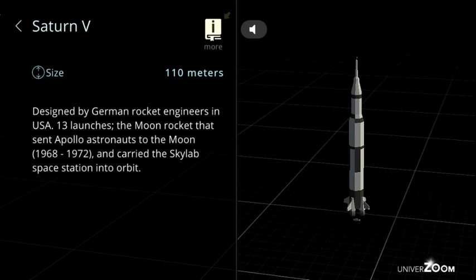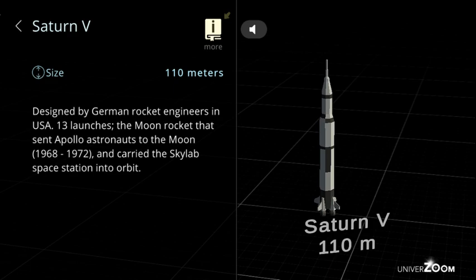Saturn V, size: 110 meters. Designed by German rocket engineers in USA. Thirteen launches. The moon rocket that sent Apollo astronauts to the moon 1968-1972 and carried the Skylab space station into orbit.